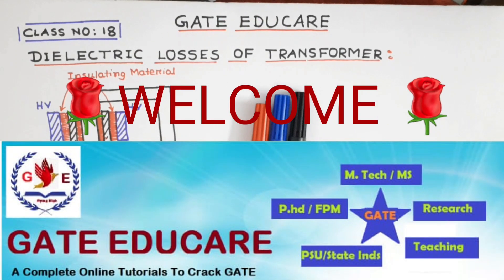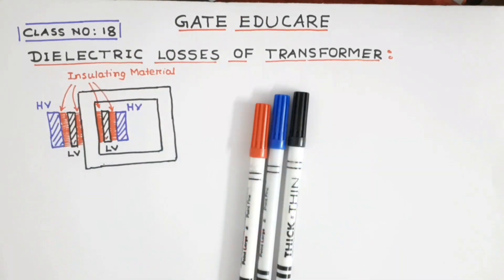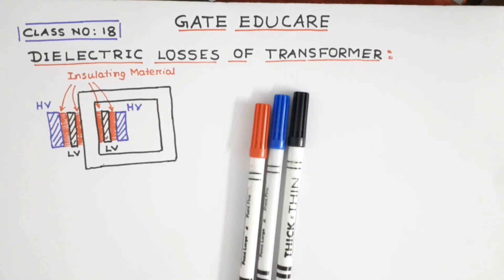Welcome to Gator2Care. Today in this video, the dielectric loss of a transformer will be explained. I will discuss what is the dielectric loss, what is the conduction current and displacement current, what is the formula of dielectric loss, what is the loss angle, and what is the loss tangent of insulating material.